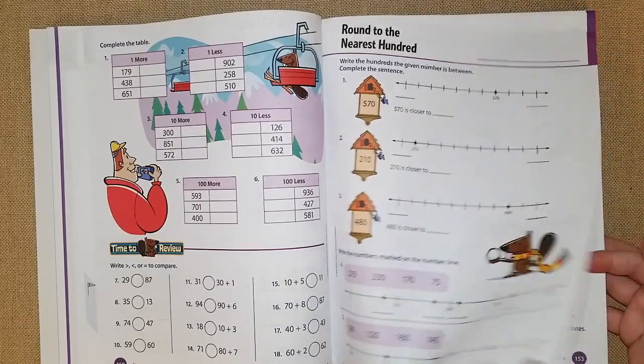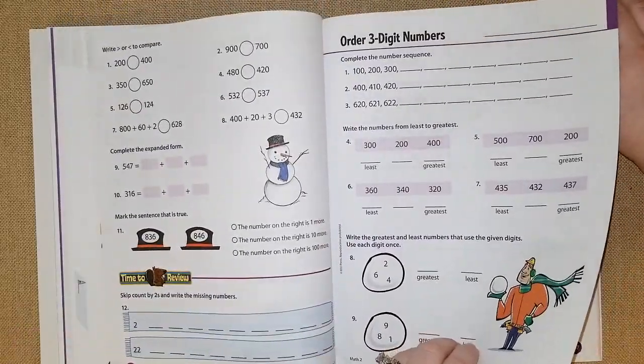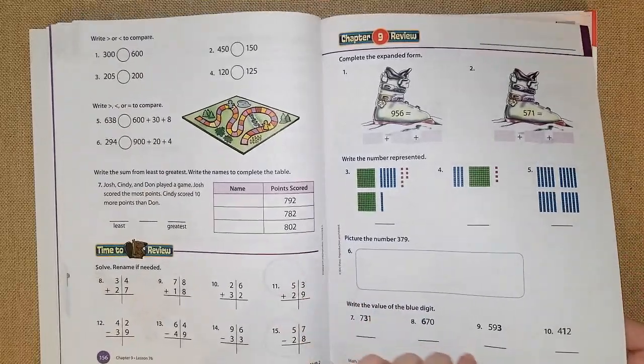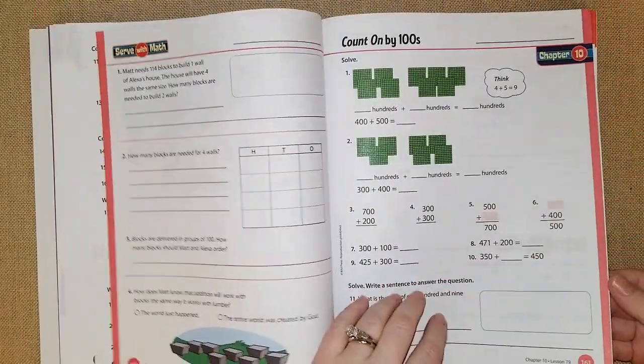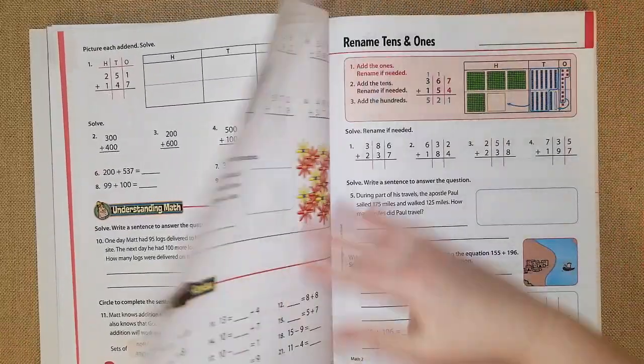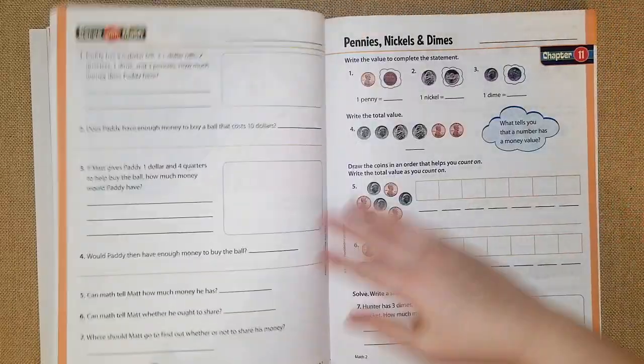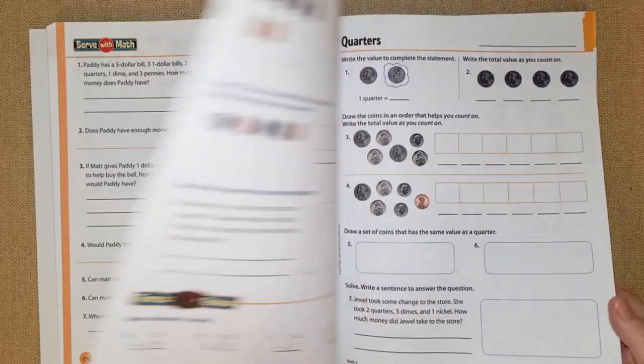This is round to the nearest hundred and I like how they show the line graph to visualize how to do it. Compare three digit numbers, order three digit numbers, and then they do a review again. So going into chapter 10 they're going to count on by 100s, add three digit numbers, rename tens and ones. In chapter 11 they're going to be going over pennies, nickels, dimes and quarters.